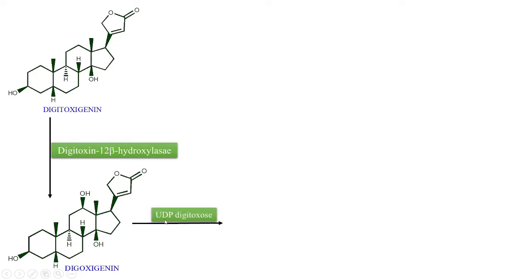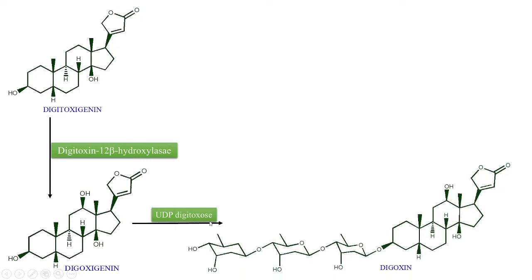Digoxigenin, in the presence of UDP-digitoxose, undergoes formation of digoxin. The digitoxose sugar is bound to uridine diphosphate (UDP), and only then can the digitoxose be incorporated into digoxigenin. There are three digitoxose moieties — first, second, and third digitoxose — and after incorporation of all three, digoxin is formed.